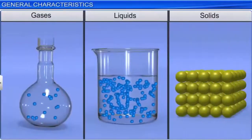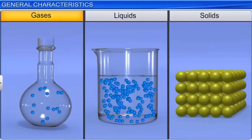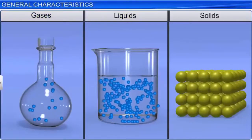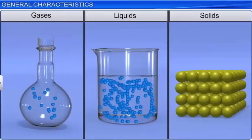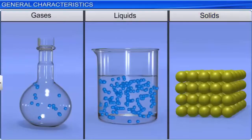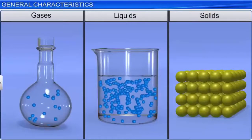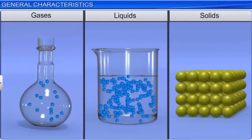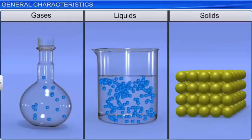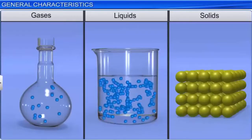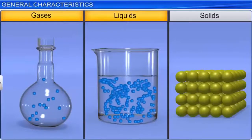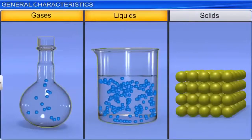The constituent particles in gases and liquids are held together by relatively weak forces of attraction compared to those in solids. As a consequence, they can translate randomly, rotate, and vibrate. Gases and liquids, thus, have the ability to flow and take the shape of their container.